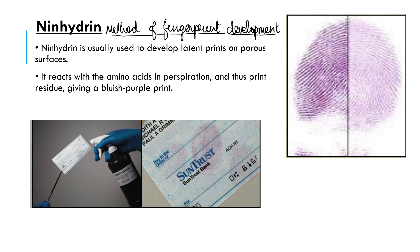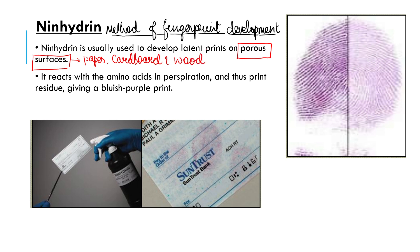What are the characteristic features of the ninhydrin method? Ninhydrin method is usually used to develop latent fingerprints on porous surfaces. We can develop latent fingerprints with the help of ninhydrin on porous surfaces. Porous surfaces include paper, cardboard, and wood. These materials have small pores, which is why we call them porous surfaces.